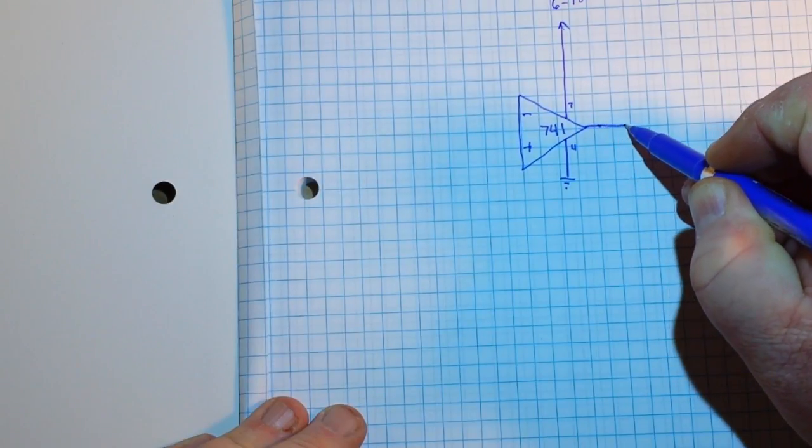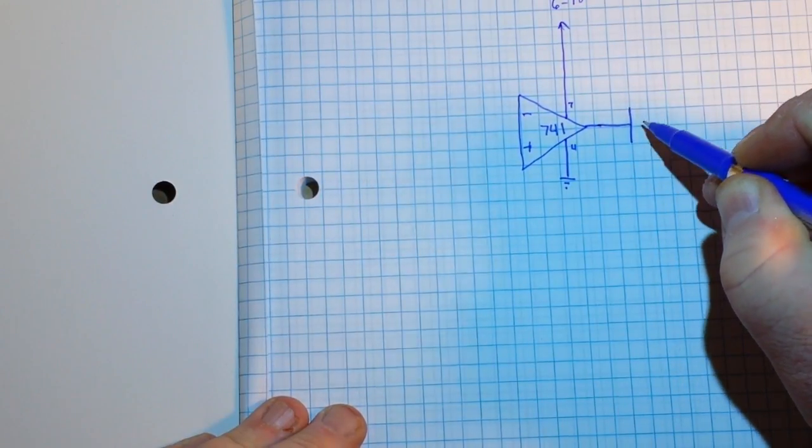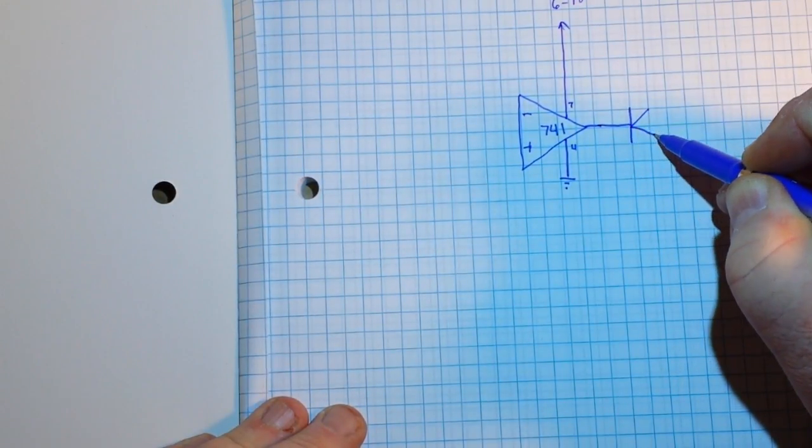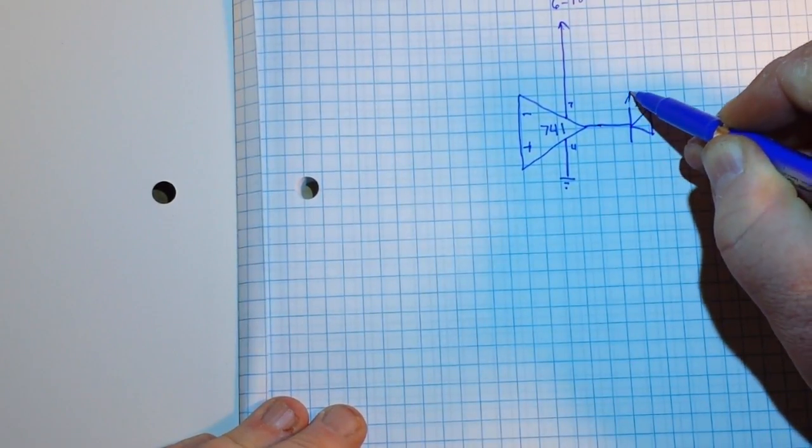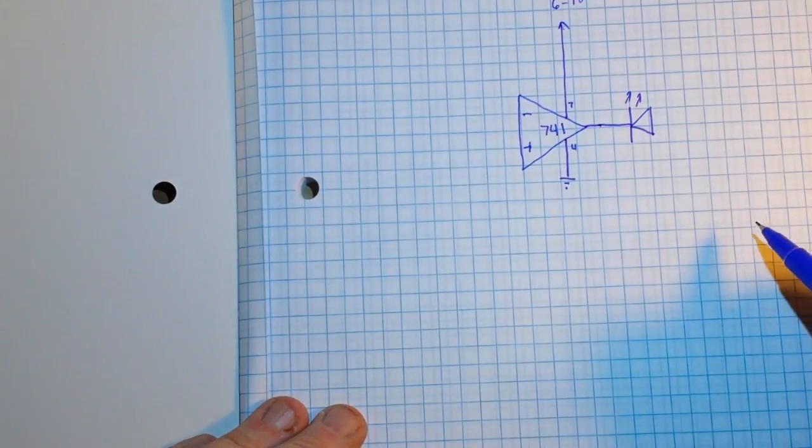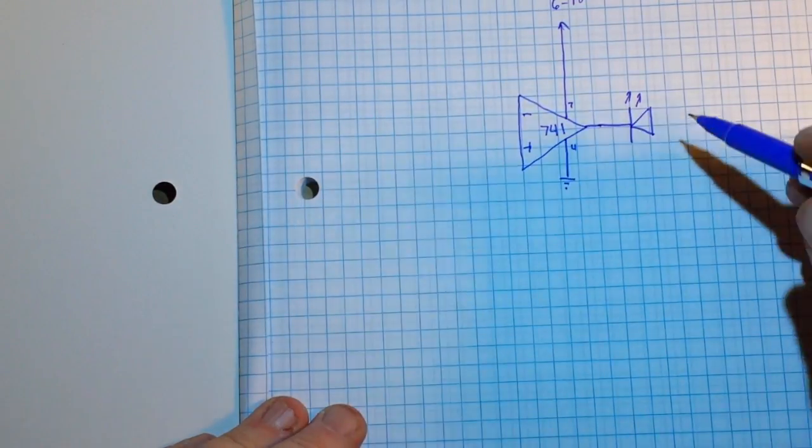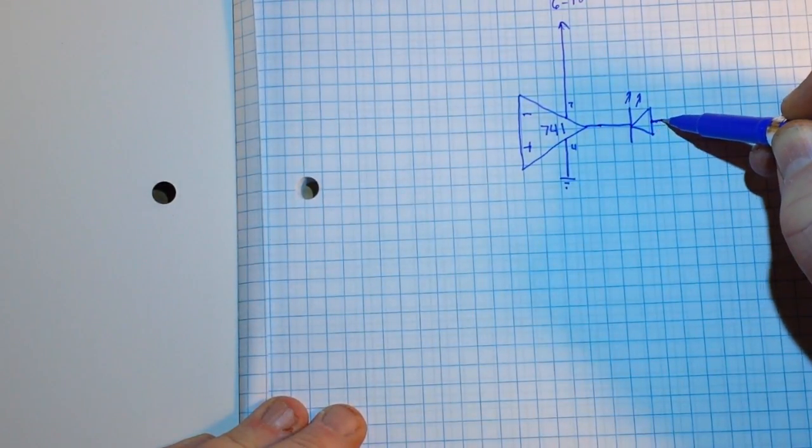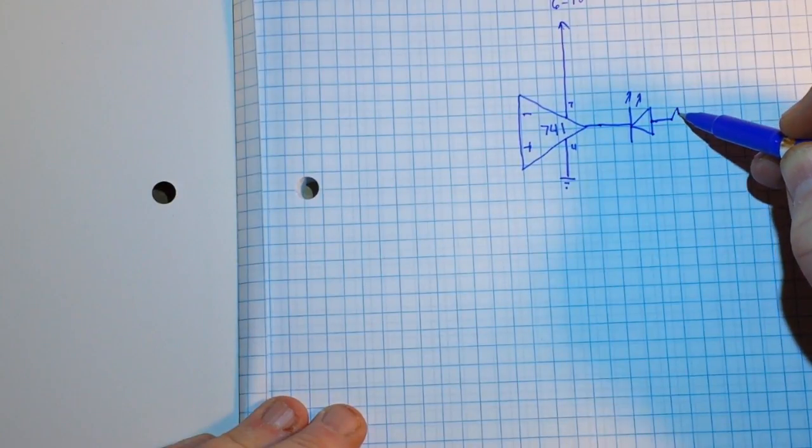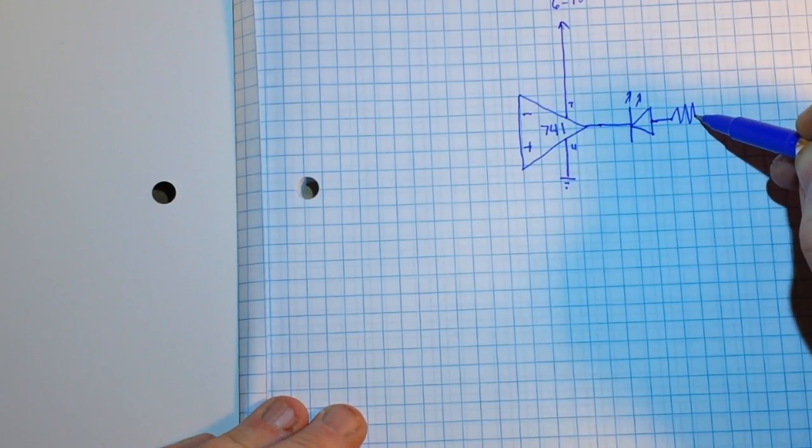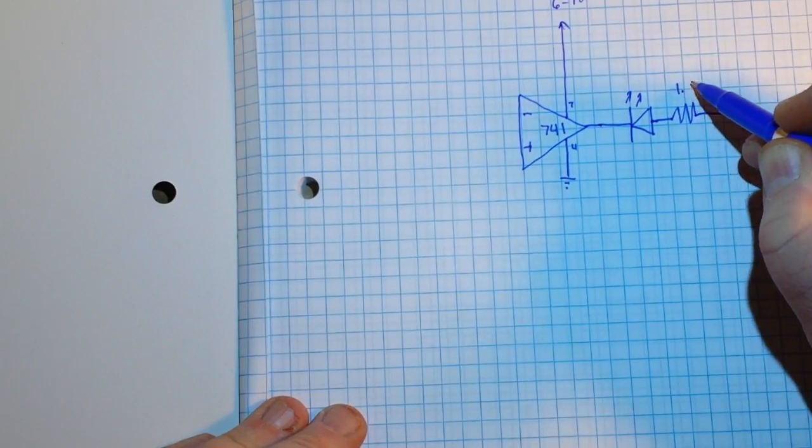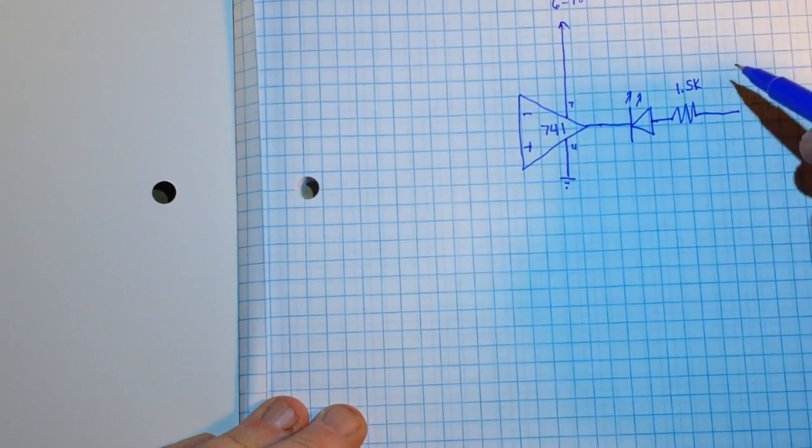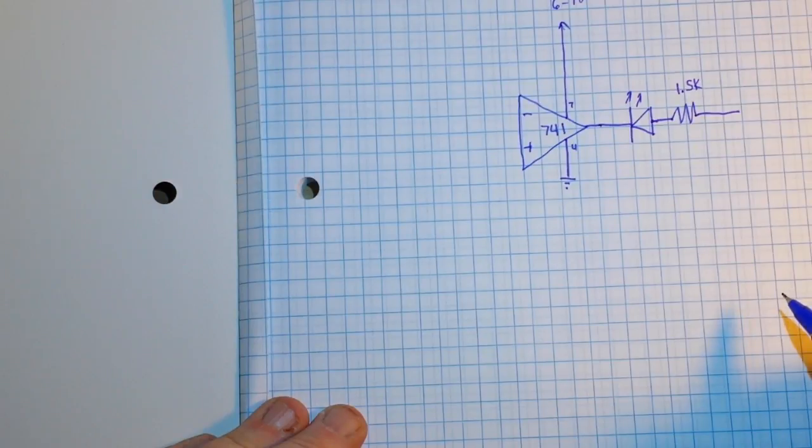Next, we're going to need our LED and our LED goes right here. And you will notice it is reverse biased, that's important. Next, a current limiting resistor for the LED, in this case we will use 1.5K.